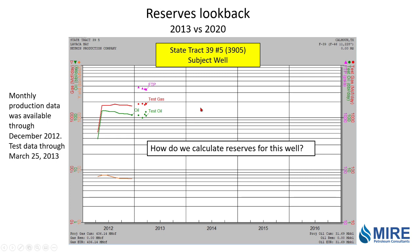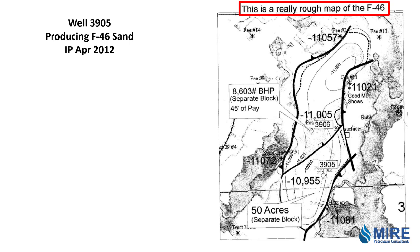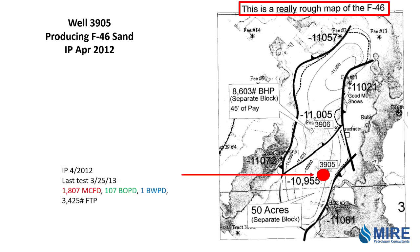So how are we going to calculate reserves? We don't really have a lot of pressure data, so the most likely way would be to try a volumetric calculation. We were provided with this rough structure map of the subject reservoir from the client's geologist. The subject well is down here in the southern fault block and it came on production in 2012. The time of the study was at the end of March and we had some test data.